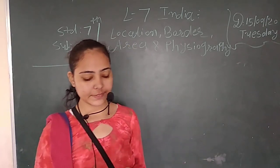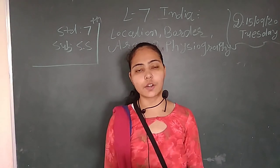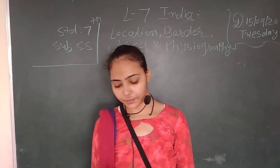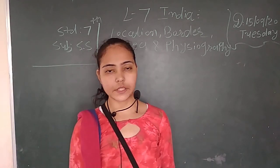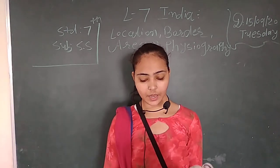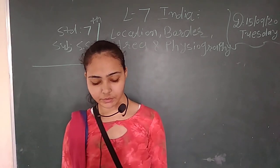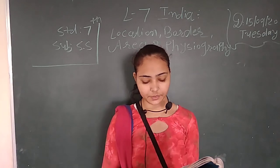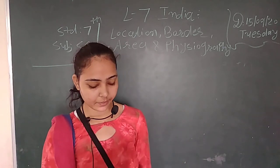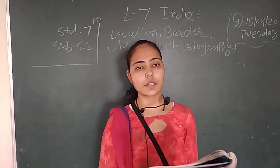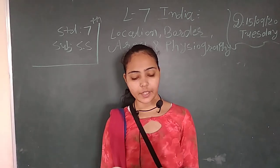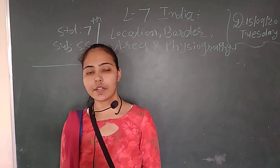Kashmir is in the north and Kanyakumari is in the south, and the cover distance is 3,514 km from north to south. It extends from the north to east and west, covering 2,933 km from east to west. The land area of India is approximately 32,87,263 km² and India is considered the 7th largest country in the world in terms of land area.